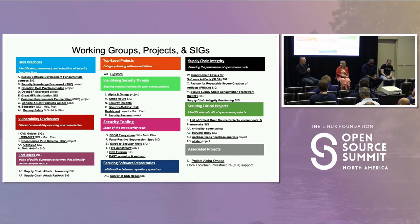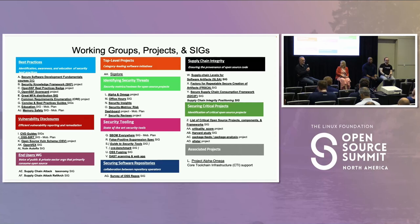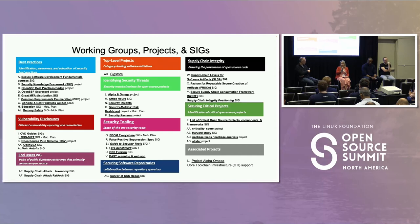SALSA 1.0 just got published. It's fair to recognize that SALSA was started by Google — they had developed it internally and felt it could be useful beyond just Google, so they contributed the specification to OpenSSF. There was just SALSA 1.0 published. The first SALSA 0.1 version actually contained about 20 different requirements, and version 1.0 only has five.